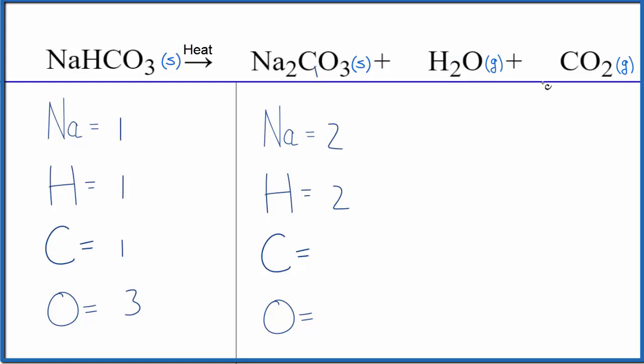and for carbon we have one here plus one there, so two carbon atoms. For oxygen we have three plus one plus two. This is usually where people have problems balancing the equation—they count the oxygens incorrectly.